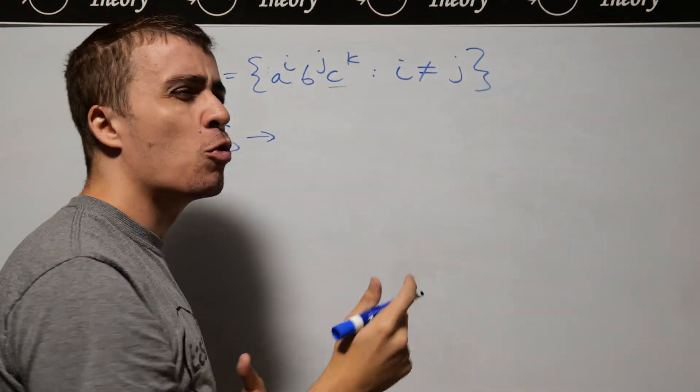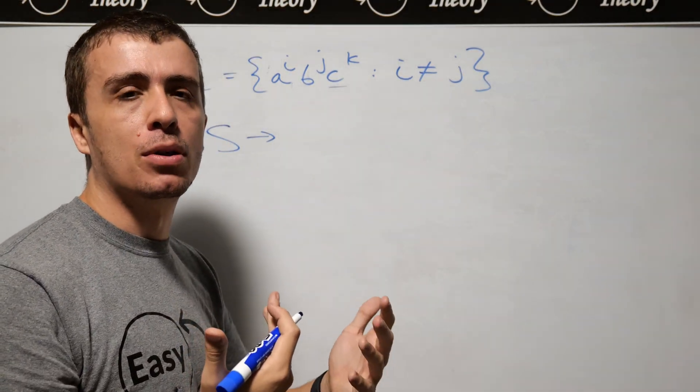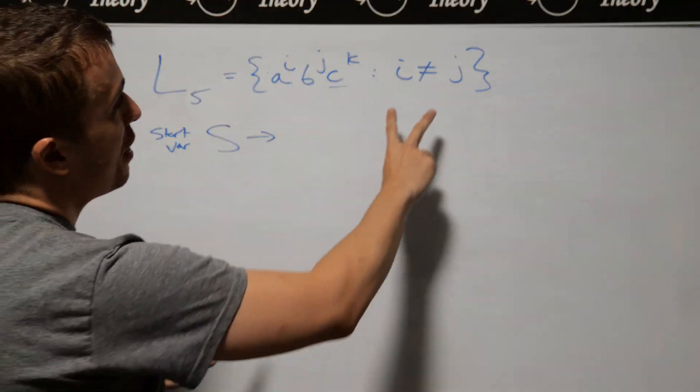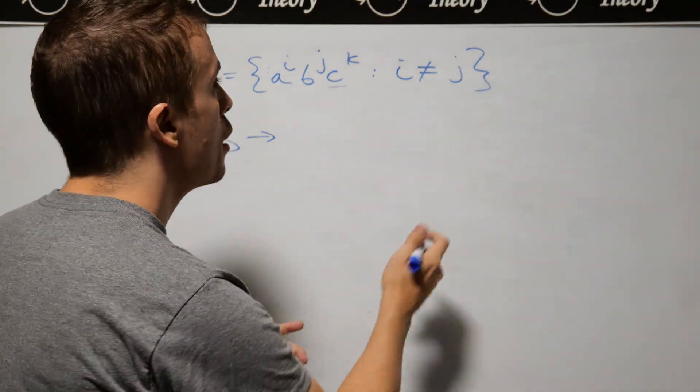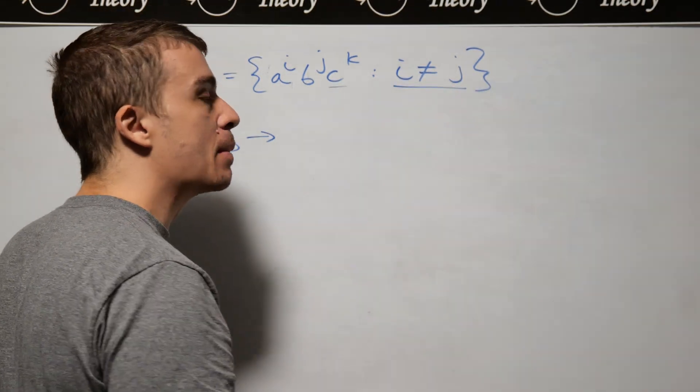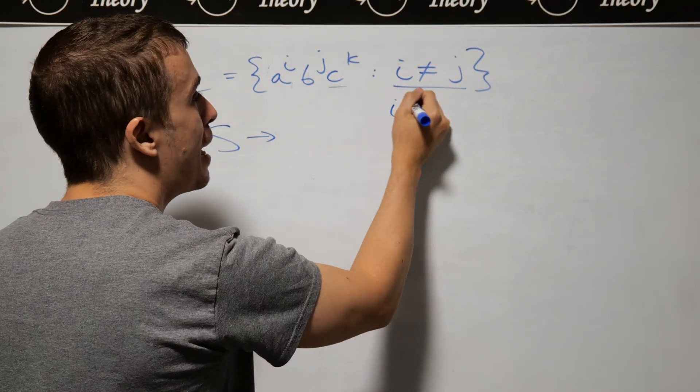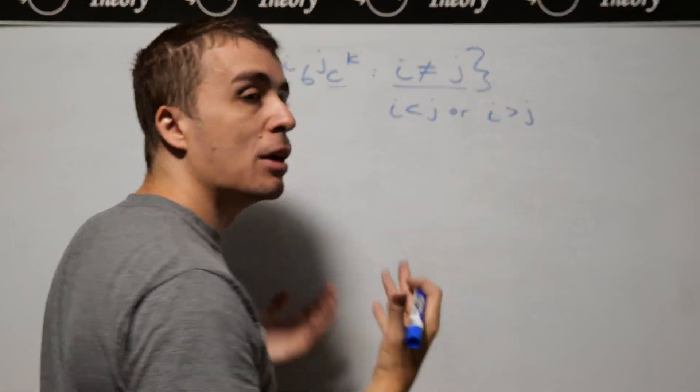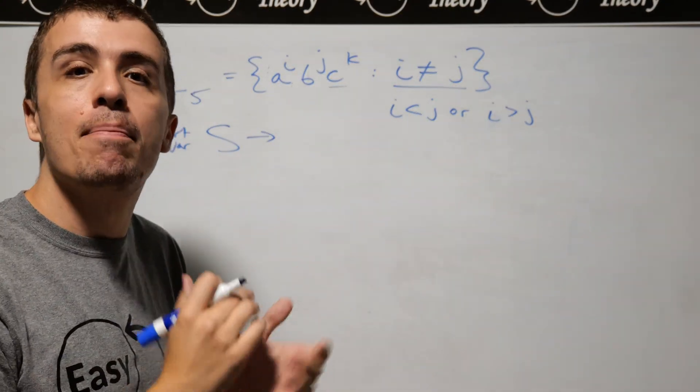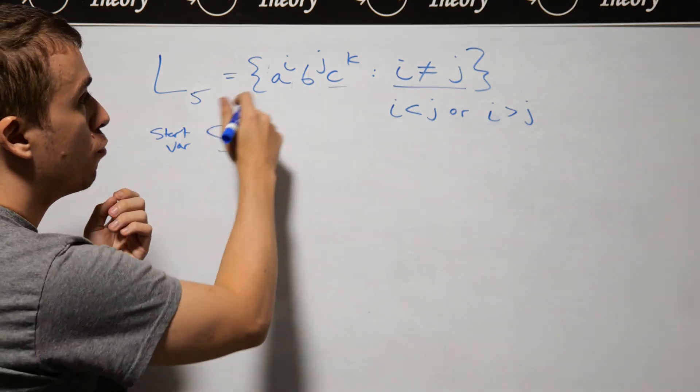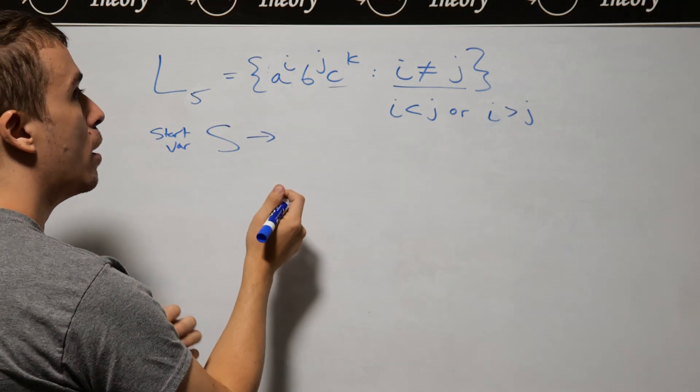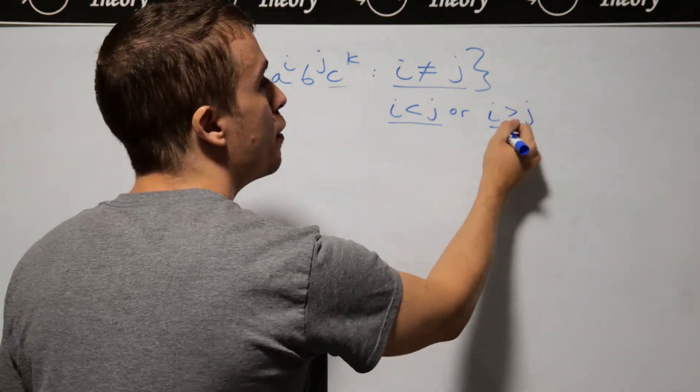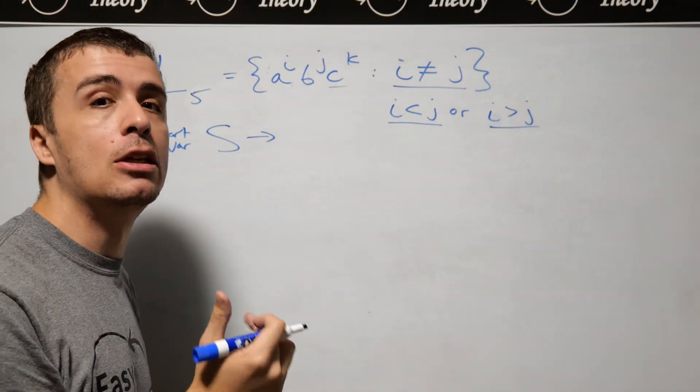How do we tell whether the counts of two variables are the same or not? We need to think about this differently. Another way of rephrasing this condition is to say i < j or i > j. It must be one of those two because they can't be the same. We're going to have a variable that corresponds to the i < j case and another variable for the i > j case.